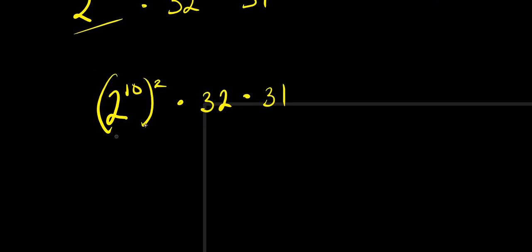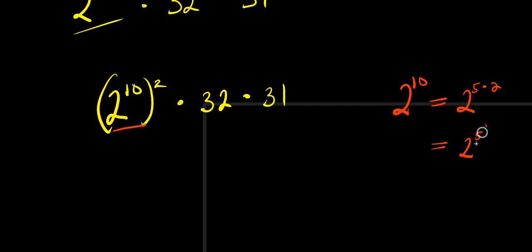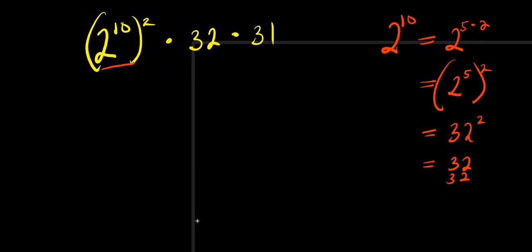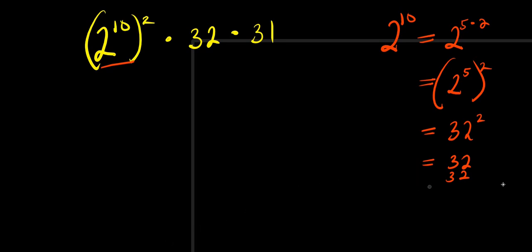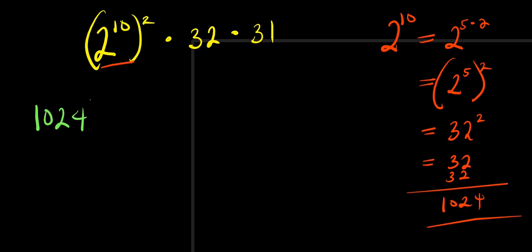2 to the power 10 is simply 2 to the power 5 raised to the power of 2, because 5 times 2 is 10. And 2 to the power 5 is 32, so 2^10 equals 32 squared, which is 32 times 32, giving us 1024. So 2^10 equals 1024.